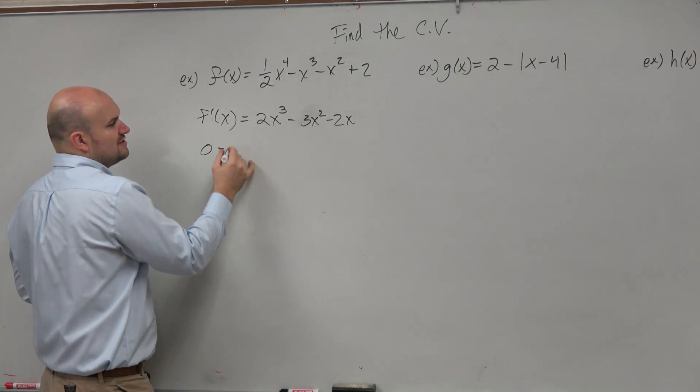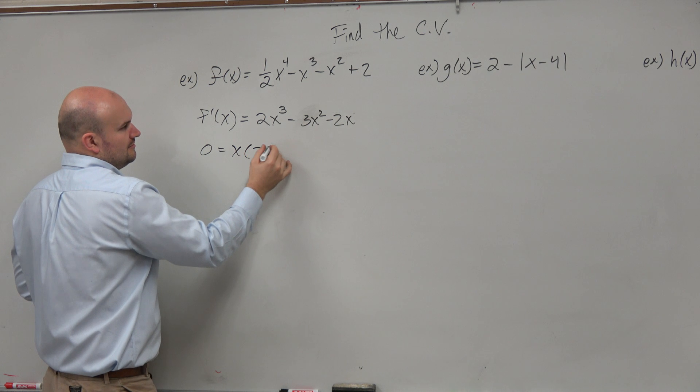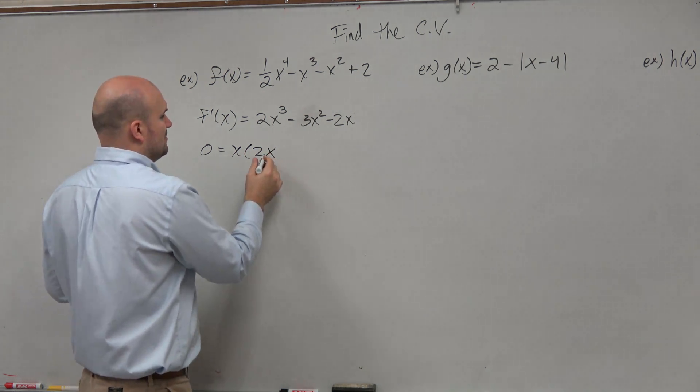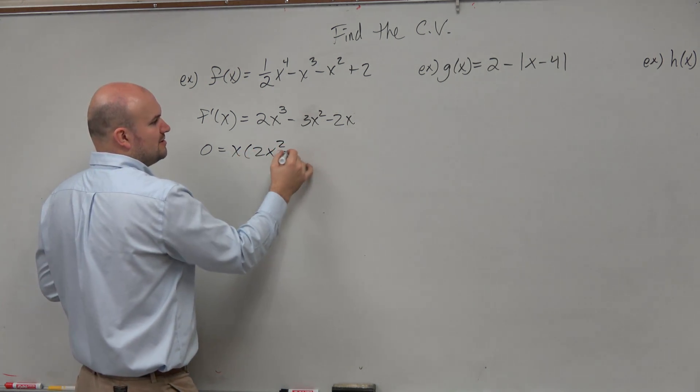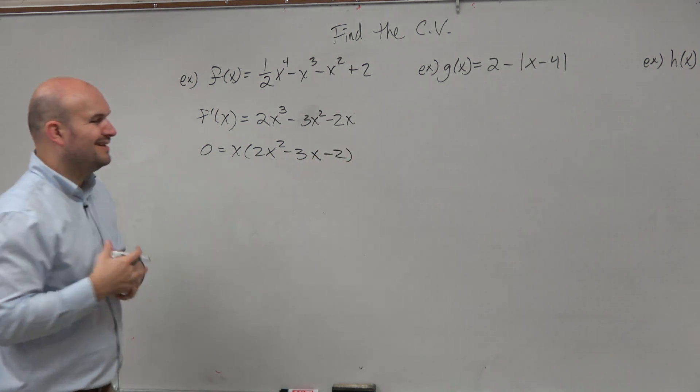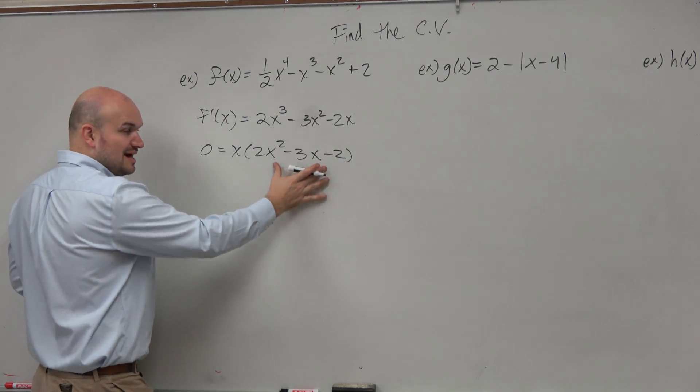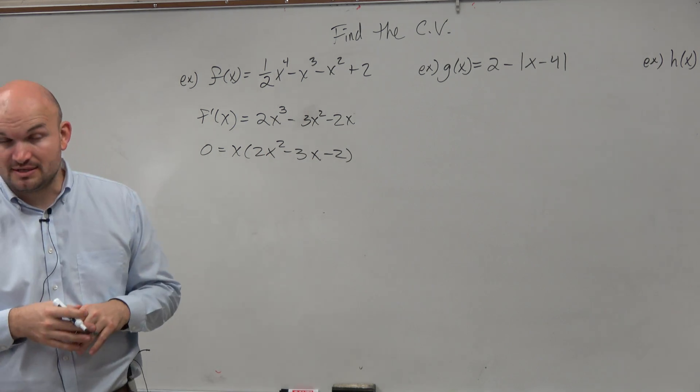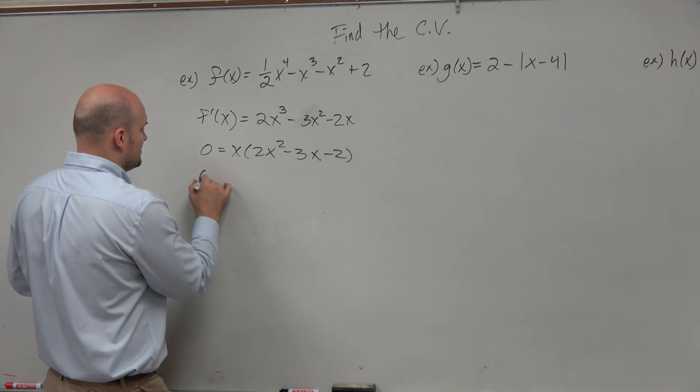So set equal to 0, I can factor out an x here. And therefore, I have my factor of x. I'm left with 2x² - 3x - 2. Now, this makes it a little bit more simple. So now I need to see if I can factor this. It is a quadratic. So you want to see, how could I break this down?